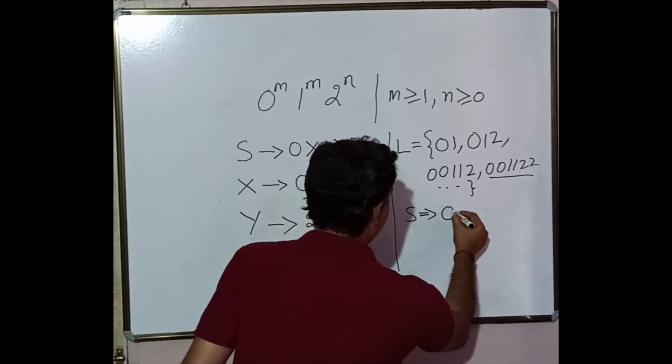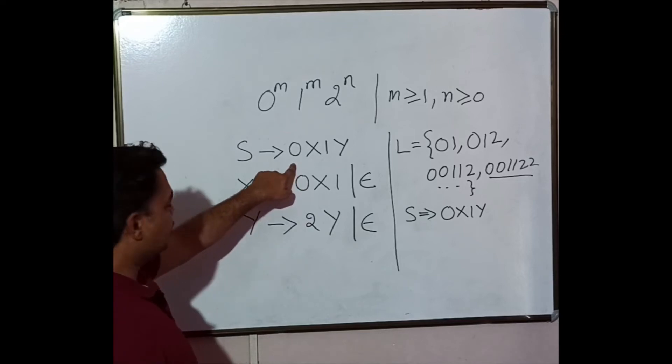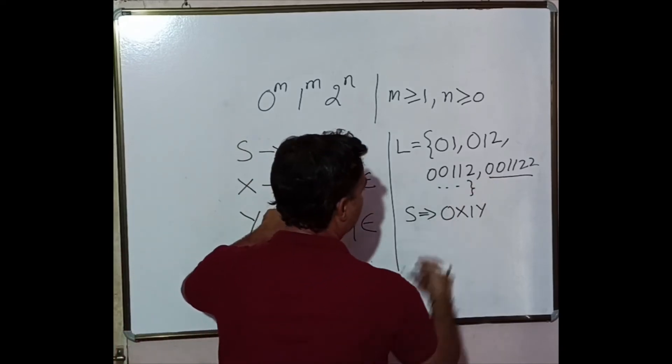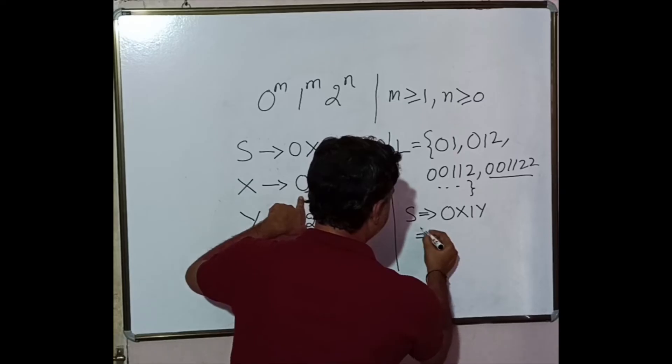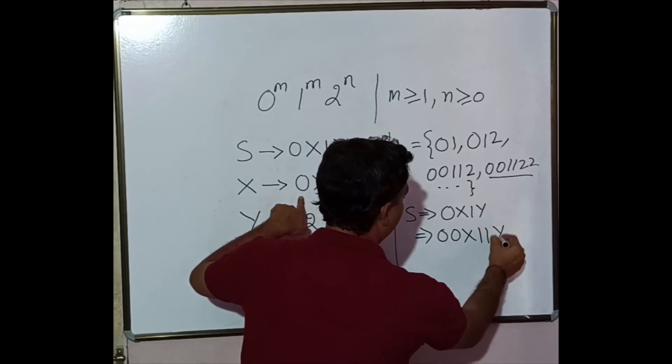S derives 0, X, 1, Y. This particular rule I am applying. Now I can apply this rule because I need two more 0's and 1's. That is 0, 0, X, 1, 1, Y.